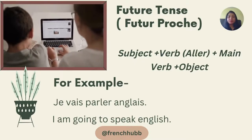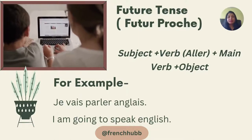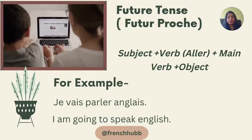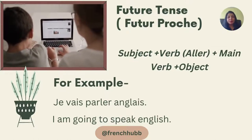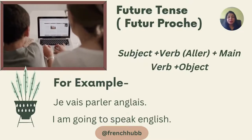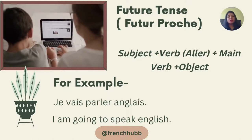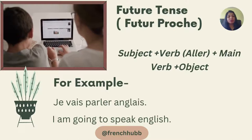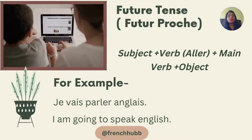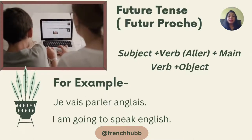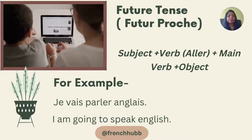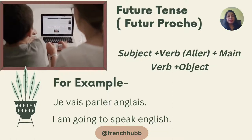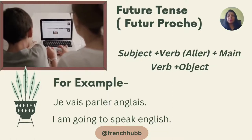Future tense. The first way of making sentences in the future is the futur proche, which is the near future. In this, we conjugate the verb aller with the subject, then add the main verb in its infinitive form, plus the object. For example: je vais parler anglais — I am going to speak English. Je is my subject; vais is the conjugated form of aller; parler is the main verb in its full infinitive form; and anglais is my object.